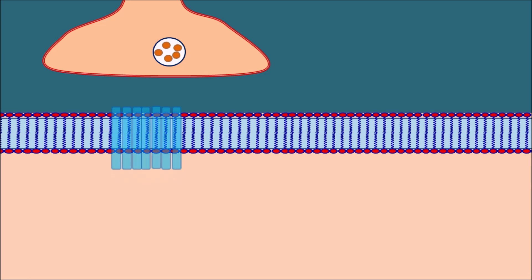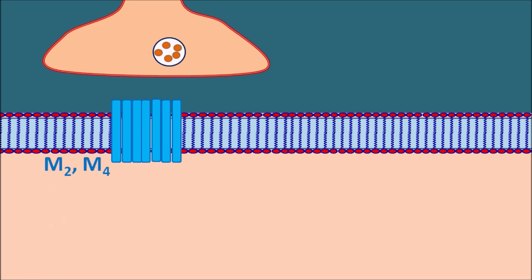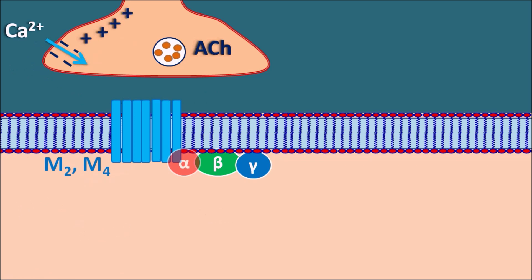At some organs, another type of G protein-coupled receptors are present — the M2 or M4 receptors. These are muscarinic acetylcholine receptors associated with three subunits: alpha, beta, and gamma. M2 and M4 are inhibitory in nature and produce the inhibitory response through the alpha subunit. When acetylcholine is released by exocytosis, it can act on M2 or M4 receptors.